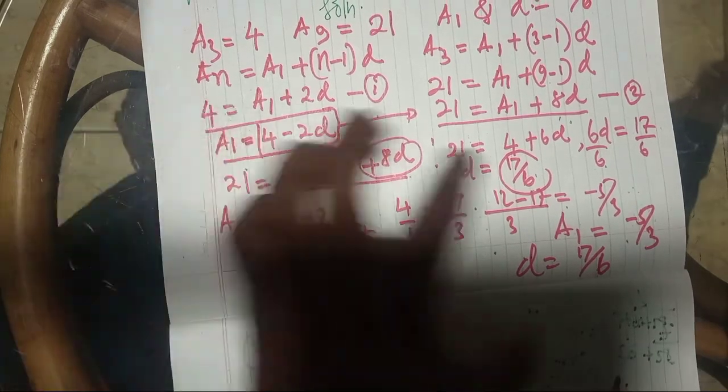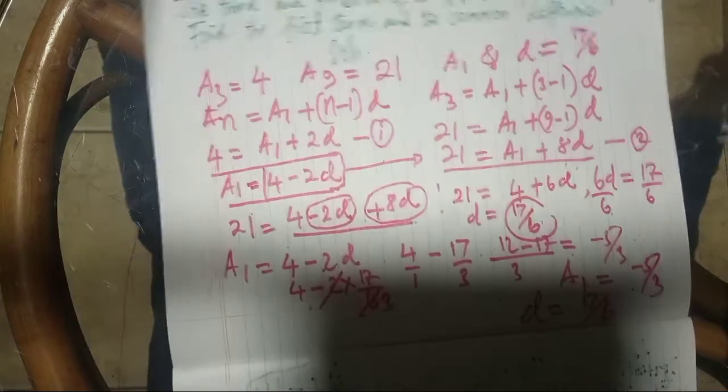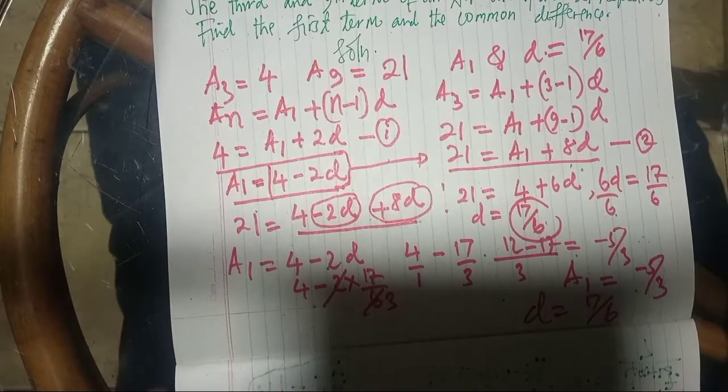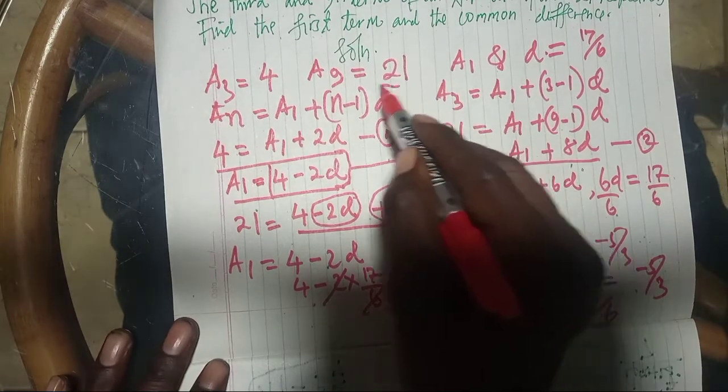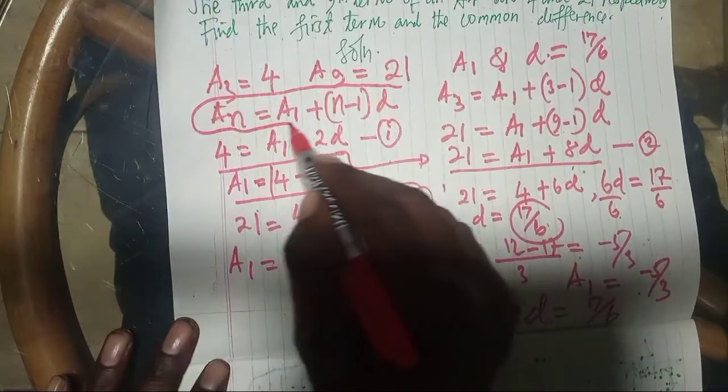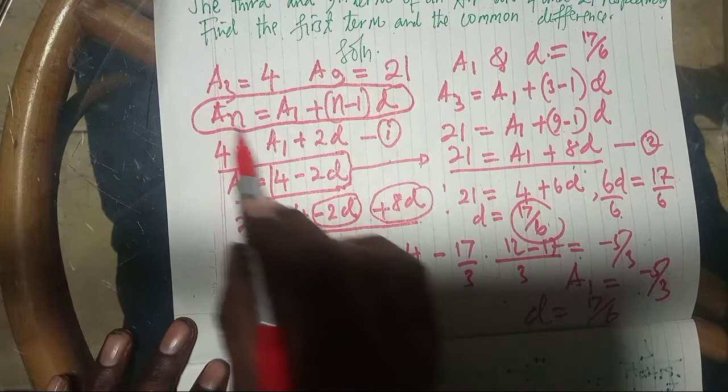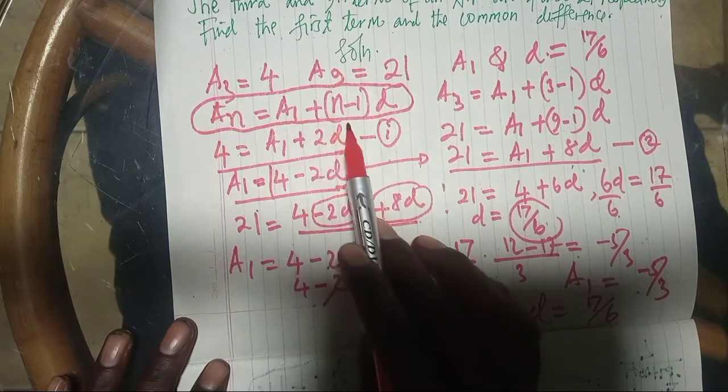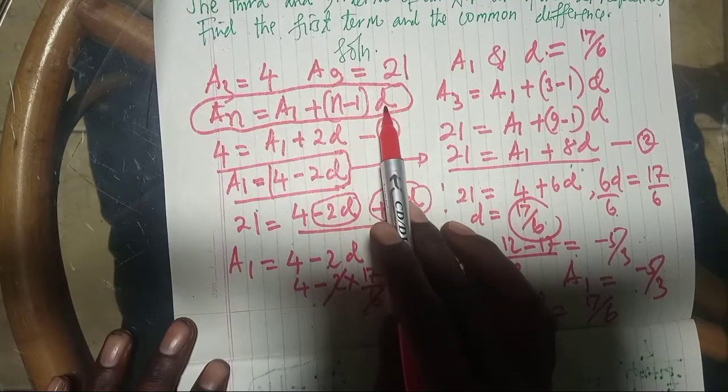This is how you solve these questions. When you look at these questions, you use the formula which is here. This is the formula, where the Nth term equals A1 plus N minus 1 times D.